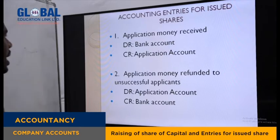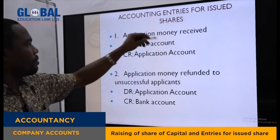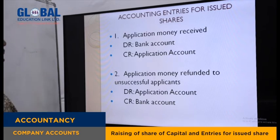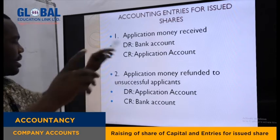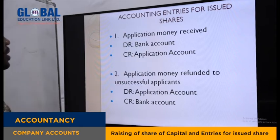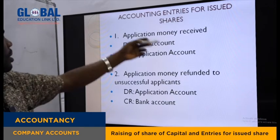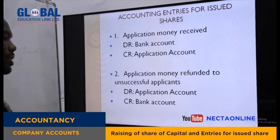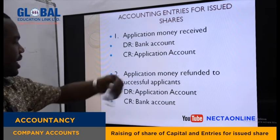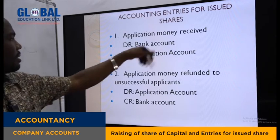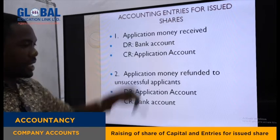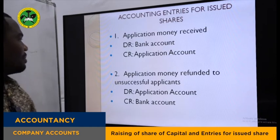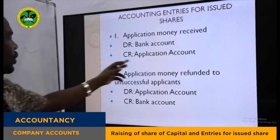Let us now see the accounting entries for issued shares. The terms of issue for ordinary shares, preference shares, and debentures are the same. The first entry is when we receive money. Once we issue a prospectus to the community, we expect them to apply for the share. As they apply, they send the application letter together with application money. Once we receive the application money, we debit bank account and credit application account or share applicant account.